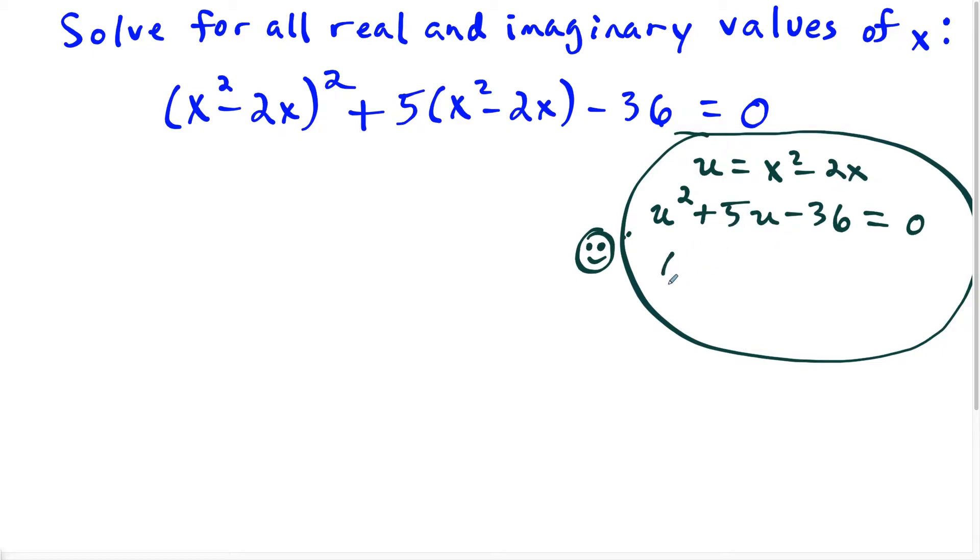And if I had to factor this, I would factor this as u plus 9 times u minus 4 and set this equal to zero. So thinking about it in simpler terms, then allows you to take this complicated equation here and break it down into something nicer.